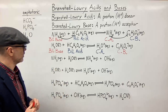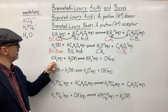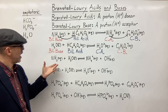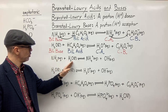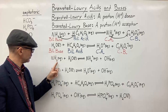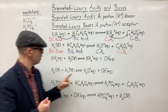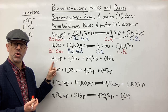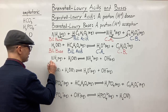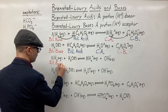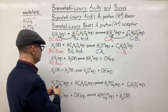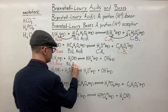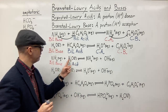Here we have ammonia reacting with water. The NH3 picked up an H+ to form the ammonium ion — that H+ came from the water. So water in this case is donating H+ to the ammonia. Ammonia is the Bronsted-Lowry base, accepting the proton, and water is the Bronsted-Lowry acid, donating one of its hydrogens to form the ammonium ion and leaving the hydroxide ion.